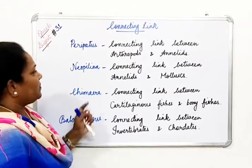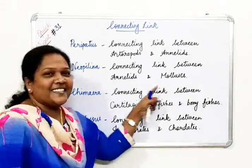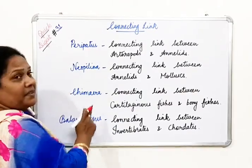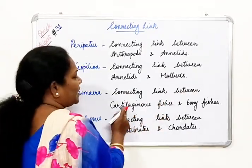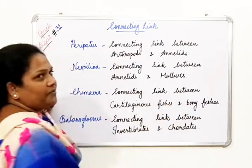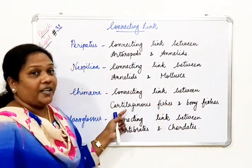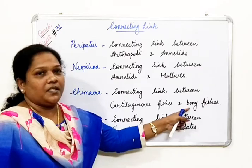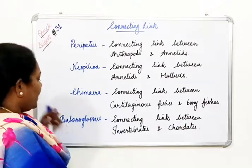The next example is Neopilina — connecting link between annelids and mollusca. Next is Chimera, the connecting link between cartilaginous fishes and bony fishes. Cartilaginous fishes come under Chondrichthyes and bony fishes are called Osteichthyes.